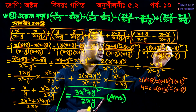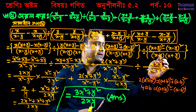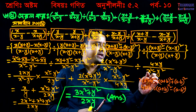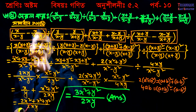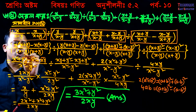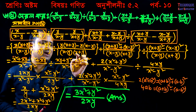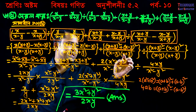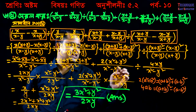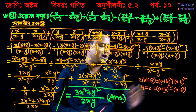A plus b whole square plus a minus b whole square equals 2(a² + b²). And a minus b into a plus b gives a squared minus b squared. So the sutra is: a plus b into a minus b equals a squared minus b squared. Similarly, x minus y into x plus y equals x squared minus y squared.